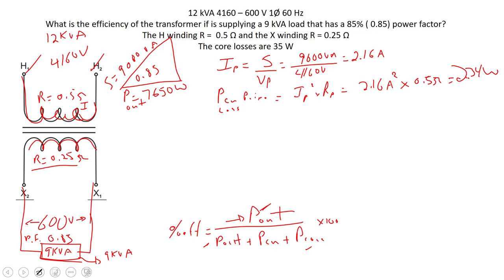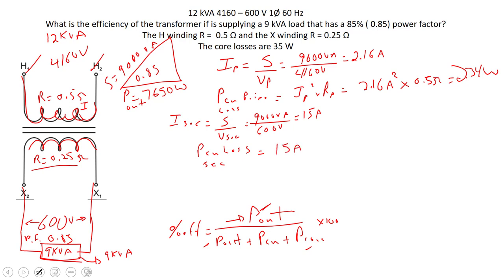For the secondary: I secondary equals S divided by V secondary, so 9000 VA divided by 600 volts equals 15 amps. The copper loss on the secondary is I squared R: 15 squared times 0.25 ohms equals 56.25 watts. Now we have both copper losses calculated.